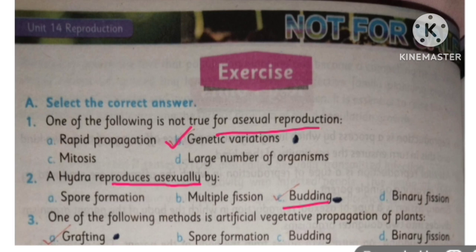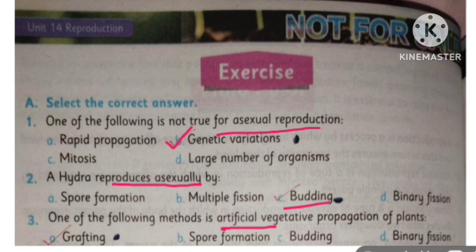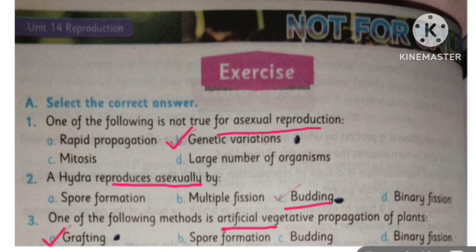MCQ number 3: Which of the following methods is artificial vegetative propagation of plants? This method is grafting.